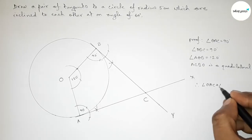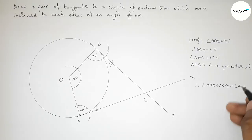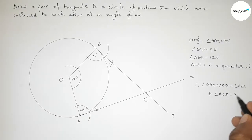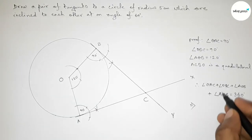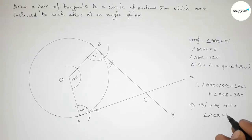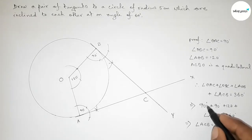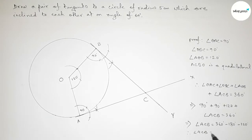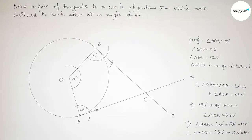Taking the sum of all angles: 90 degrees plus 90 degrees plus 120 degrees plus angle ACB equals 360 degrees. Simplifying: angle ACB equals 360 minus 180 minus 120, which gives angle ACB equal to 60 degrees.